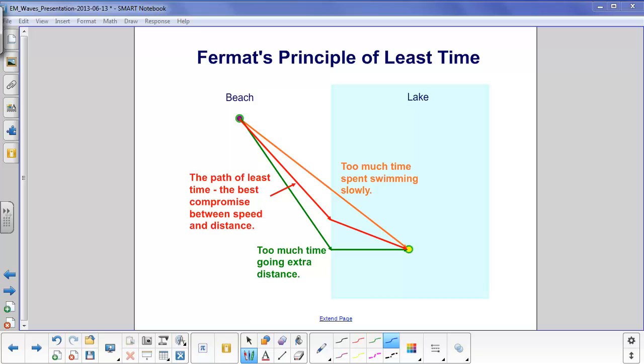But the best way is the path of least time, which is the best compromise between speed and distance. The straight path is the shortest distance, but too much time is spent swimming slowly. The beach path lets you spend more time running, which is faster, but you're going an extra distance. The actual best path is somewhere in the middle: run down the beach, then jump into the water. This is called the path of least time.